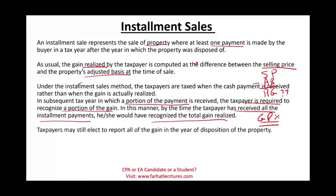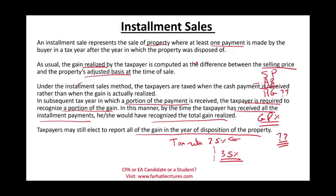The taxpayer may still elect to report all the gain in the year of disposition. Why would you do that? Maybe this year your tax rate is 25%, but in subsequent years your tax rate is 35%. So you take all the gain now and pay 25%, saving money because in future years your rate is higher. The IRS is not going to say no to that because they want their money now.